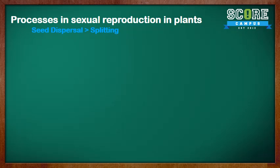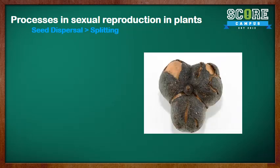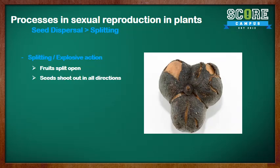The last method of seed dispersal is splitting, or explosive action. The fruits split open when ripe and shoot the seeds out in all directions. This is true for the rubber plant, as you can see here.